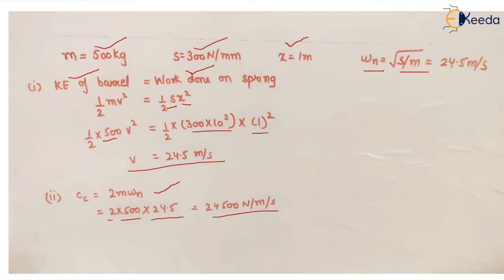And in case of damping coefficient, cc is equal to the coefficient and zeta we know is equal to 1.